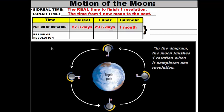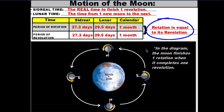Now let's look at the period of revolution — the time it takes for the moon to move around the earth. In sidereal time it's also 27.3 days, and the lunar time is 29.5 days. So it takes the moon about a month to move around the earth. If you compare the sidereal times, they're the same for rotation and revolution. The lunar times are also the same, and the calendar times are the same. This tells us that the rotation is equal to its revolution.